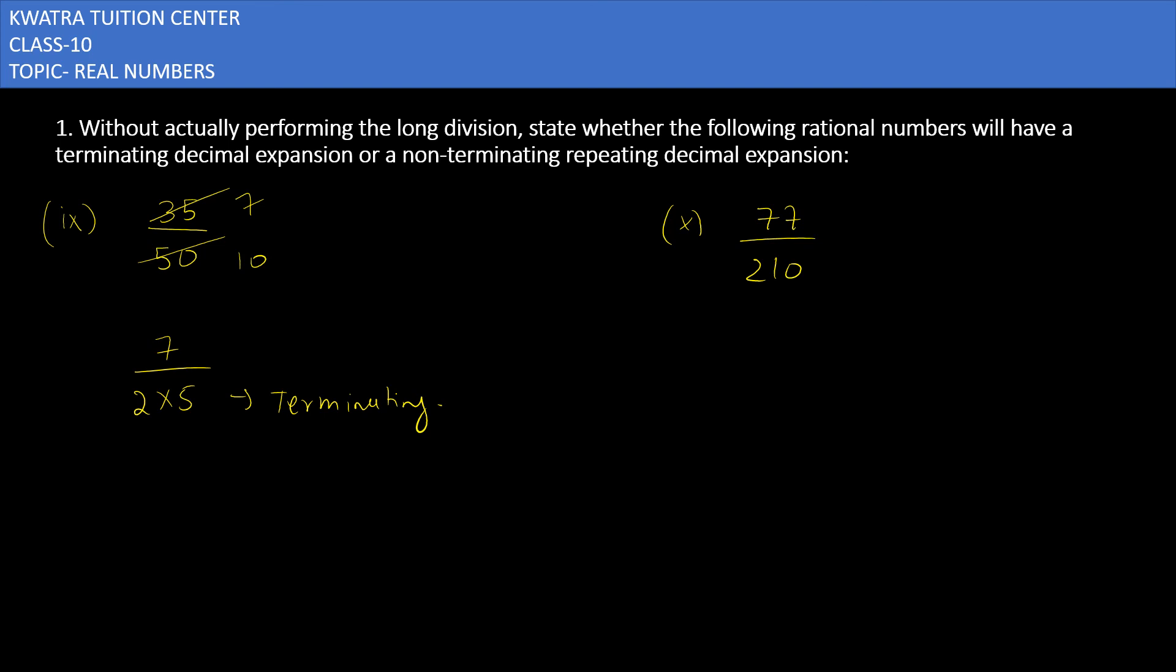Next, let's see the tenth one. It is 77 over 210. Now we will factorize 210, or we can reduce it first. 77 and 210, it is divisible with 7, so it will give you 11. And this will give you 30. So we can remove 30 factors. It will give you 2 into 3 into 5. So 3 is extra here. So it will give you 3 in the denominator. So if you have 3 present, then it will be non-terminating repeating. That's it.